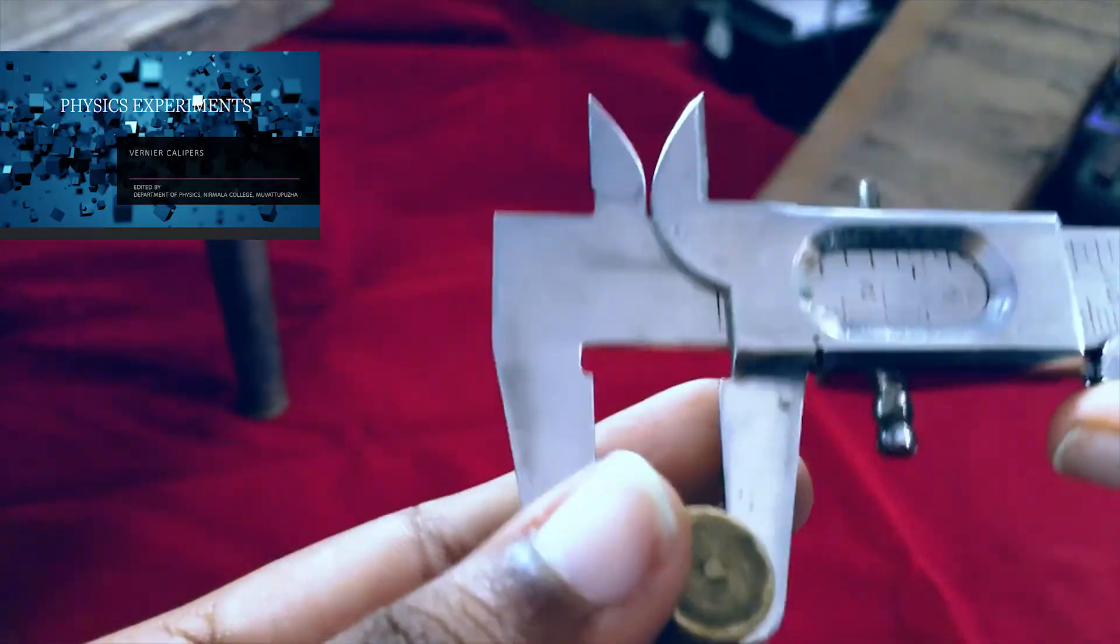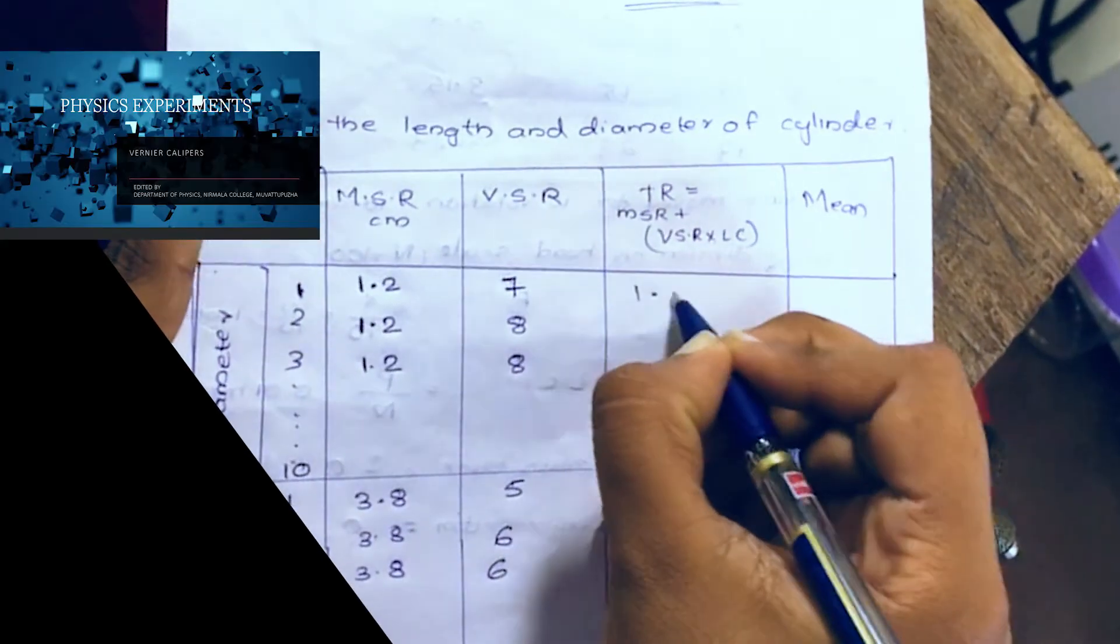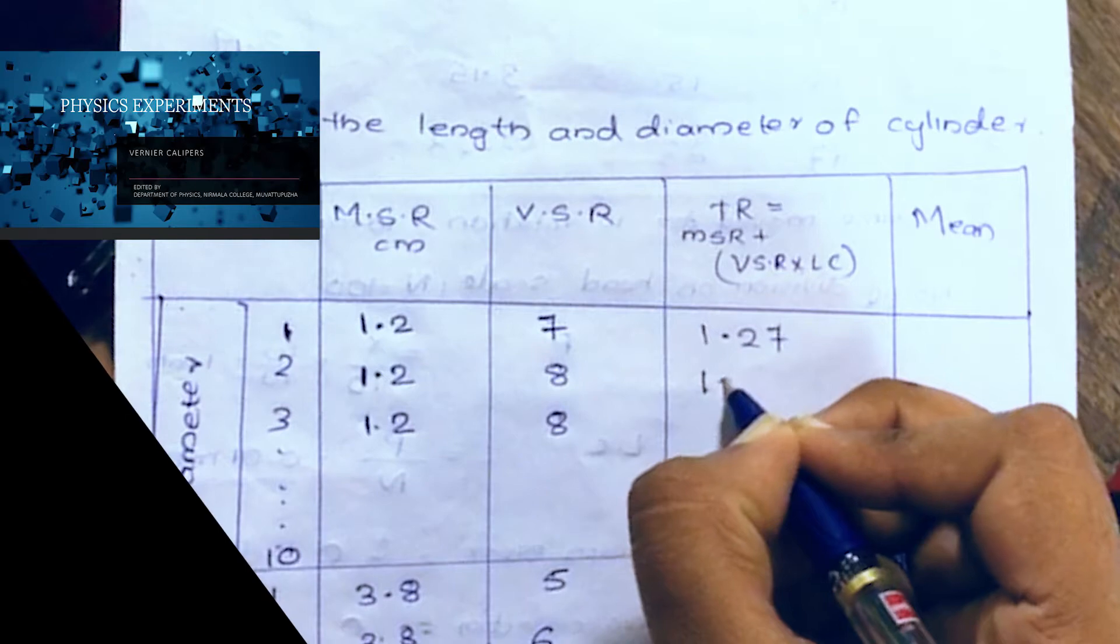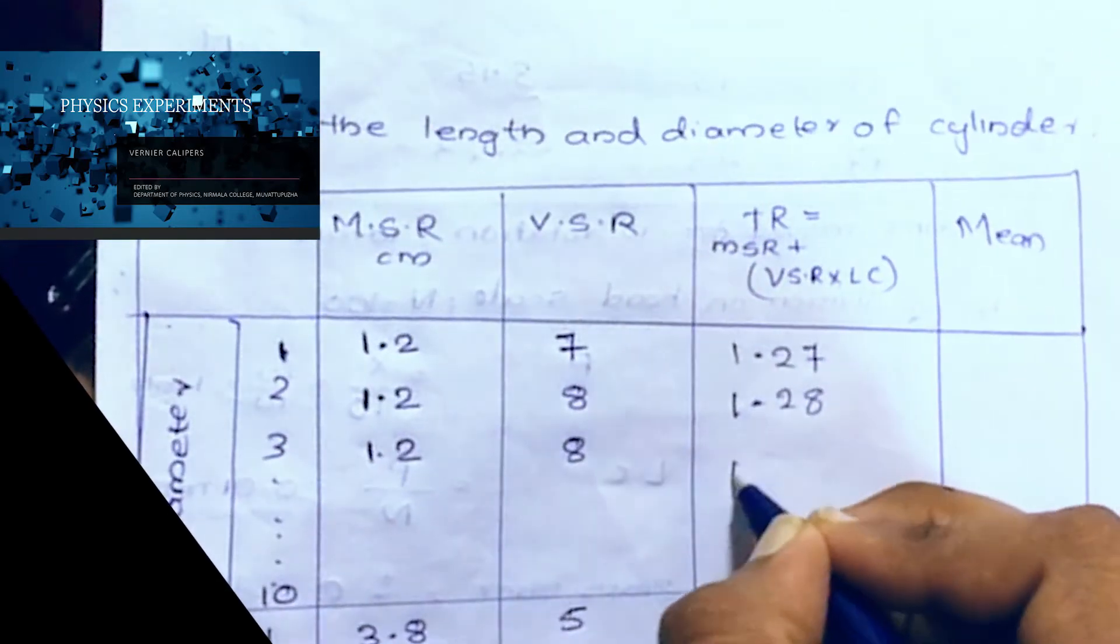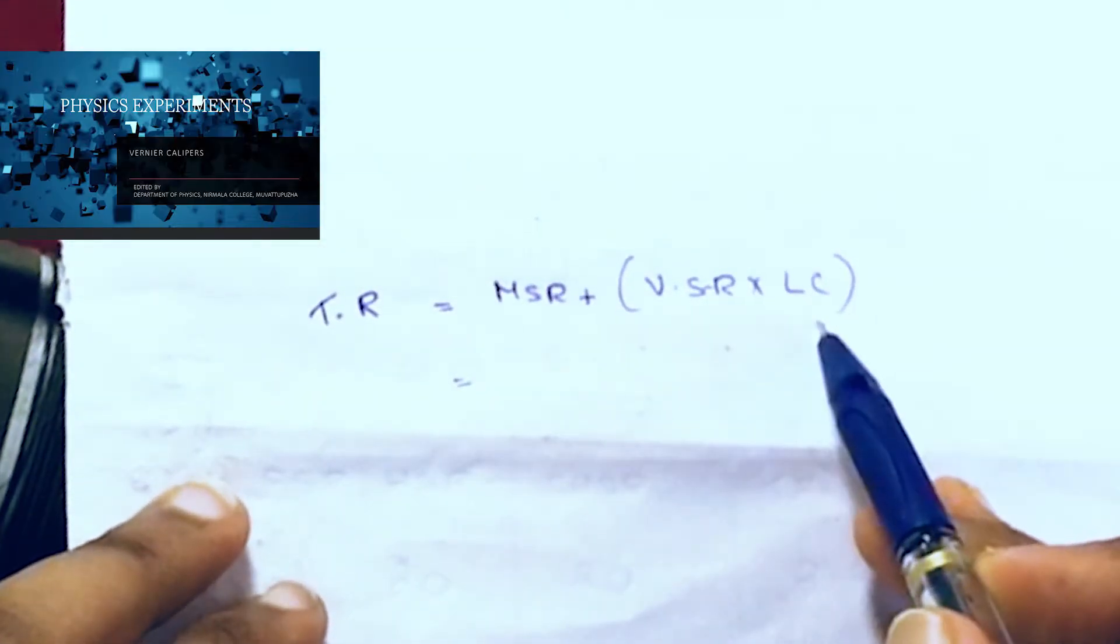Total reading - that is MSR plus VSR into least count.